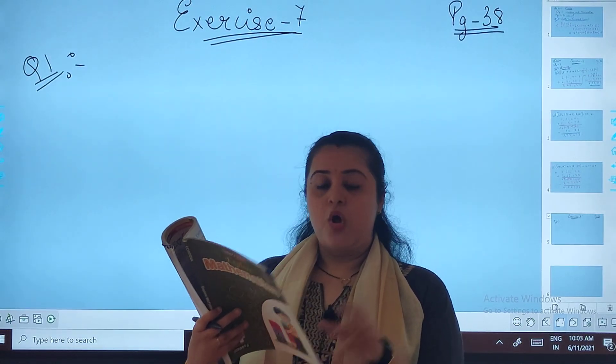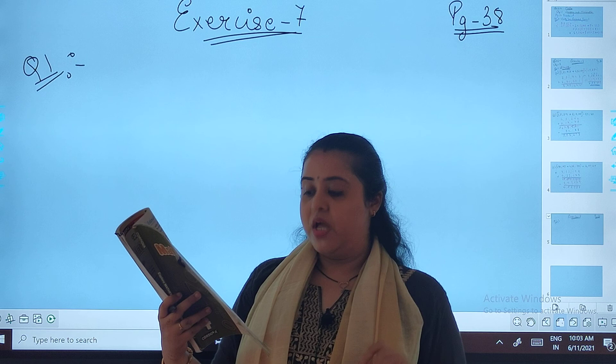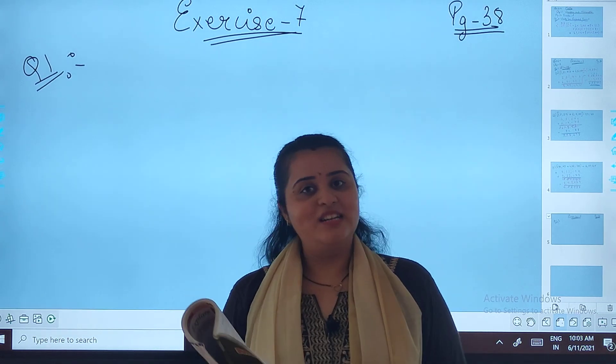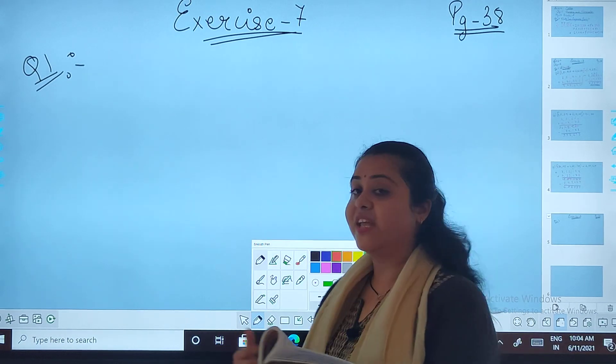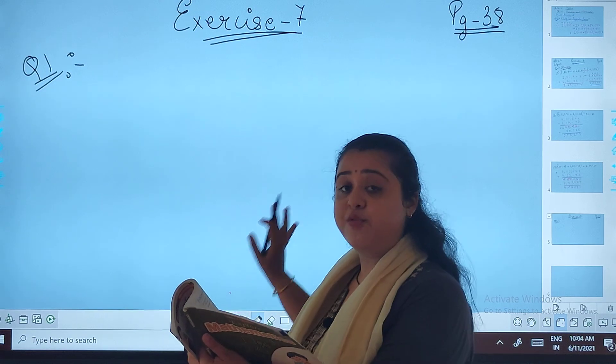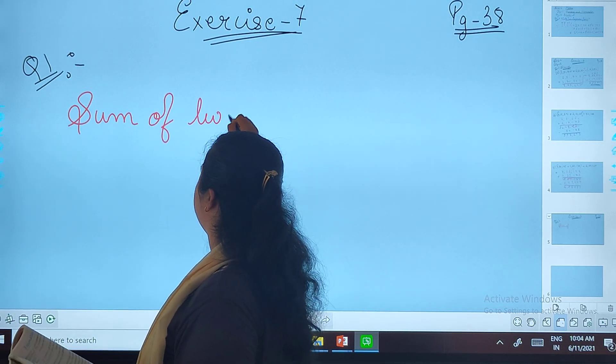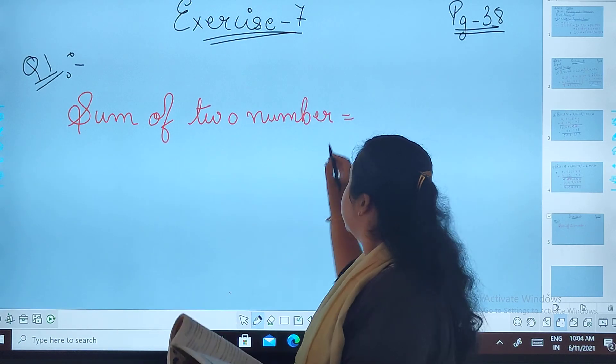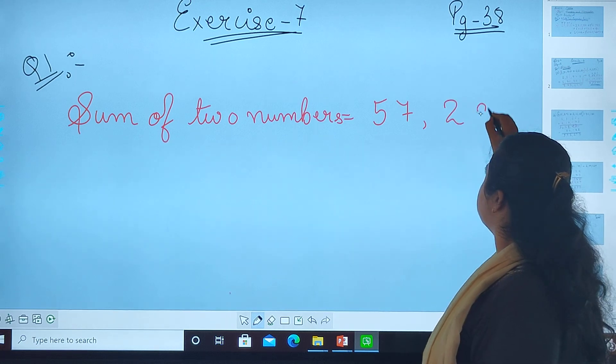Let's start. The sum of two numbers is 57,295. If one number is 25,487, find the other number. So let's start. For any exercise related to word problems, please focus on the statements. We have to write the statements like sum of two numbers, that is 57,295.